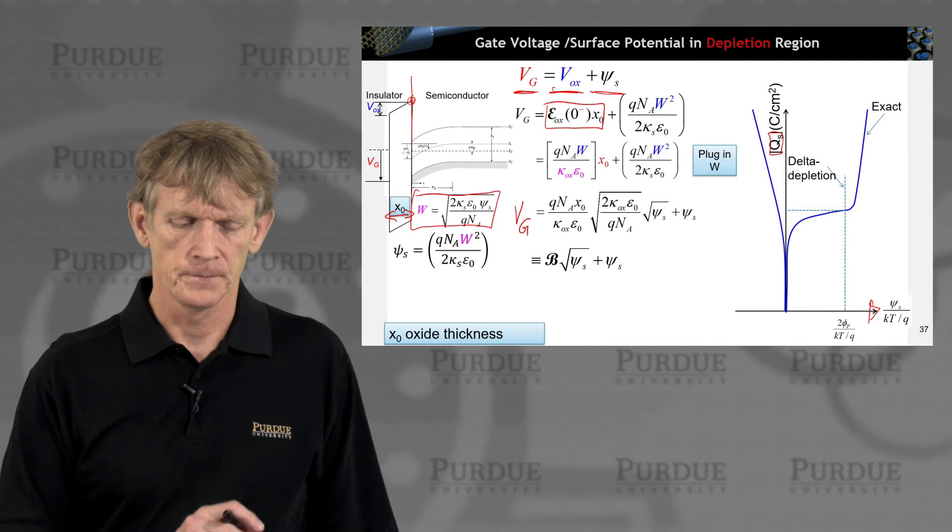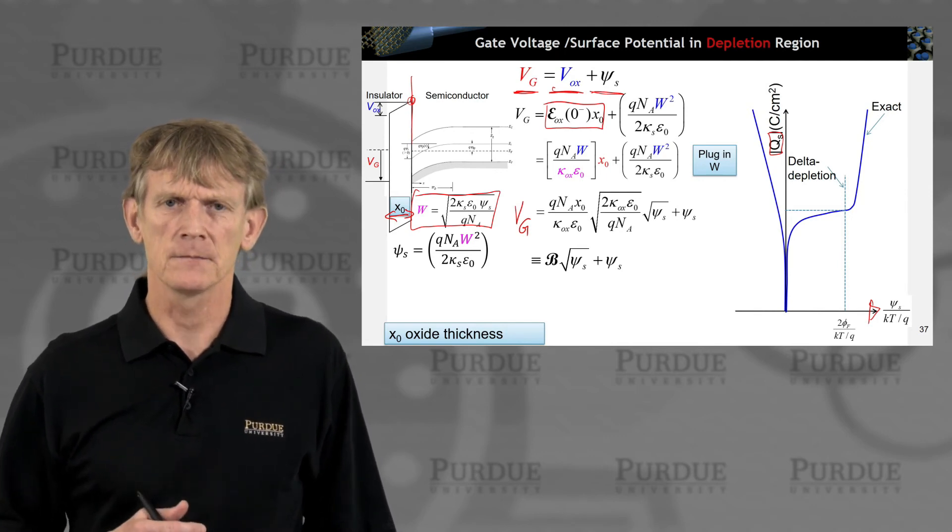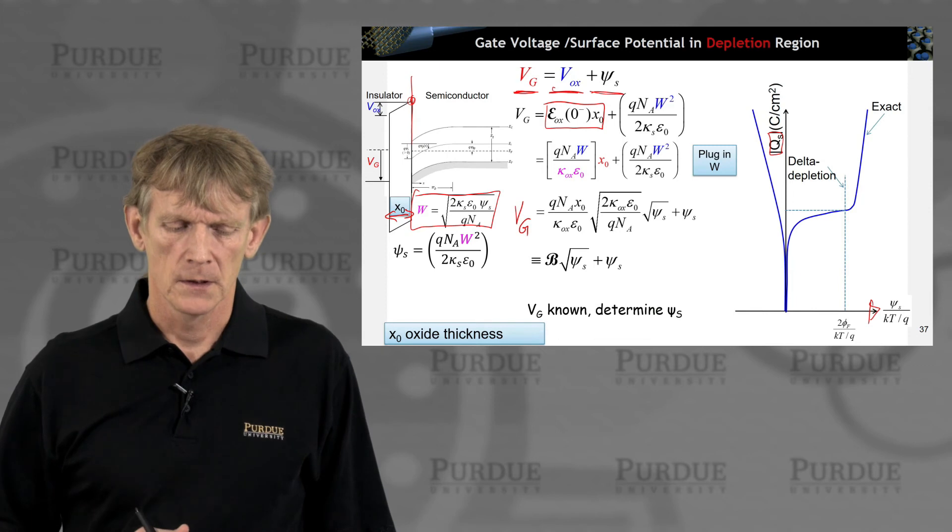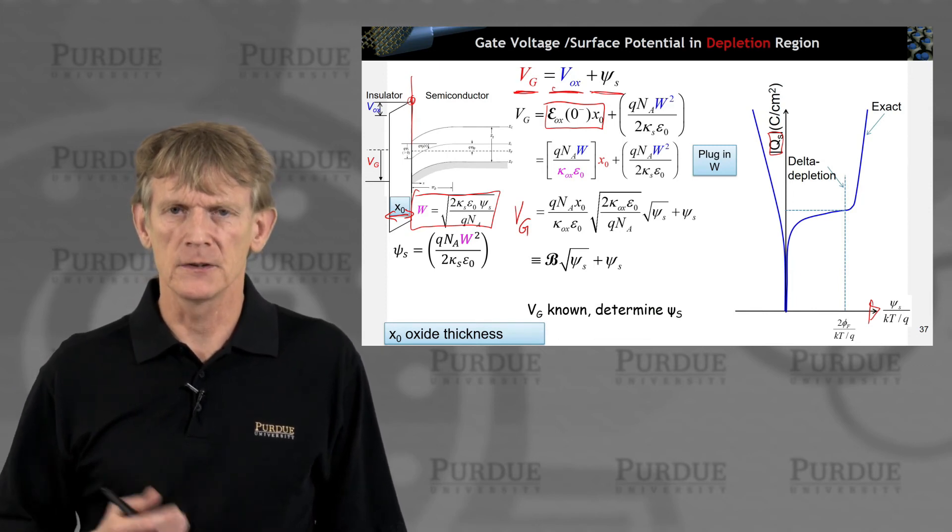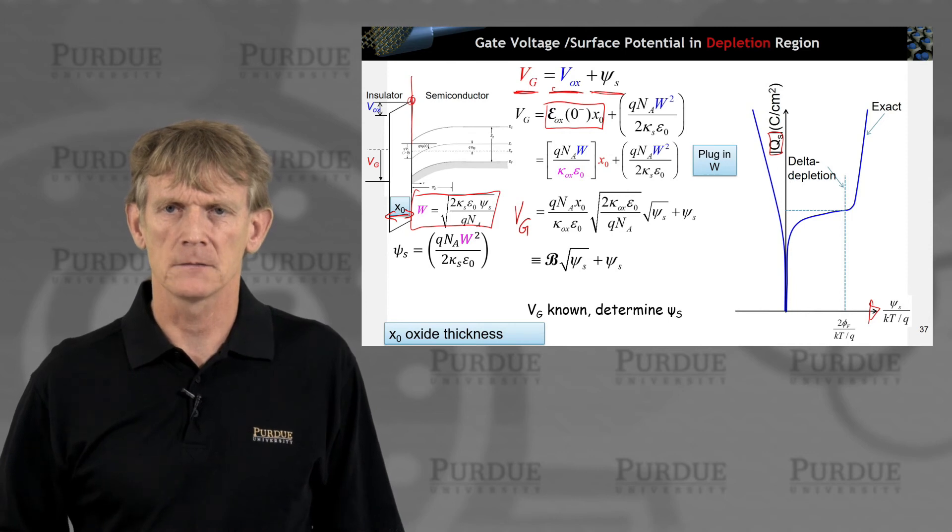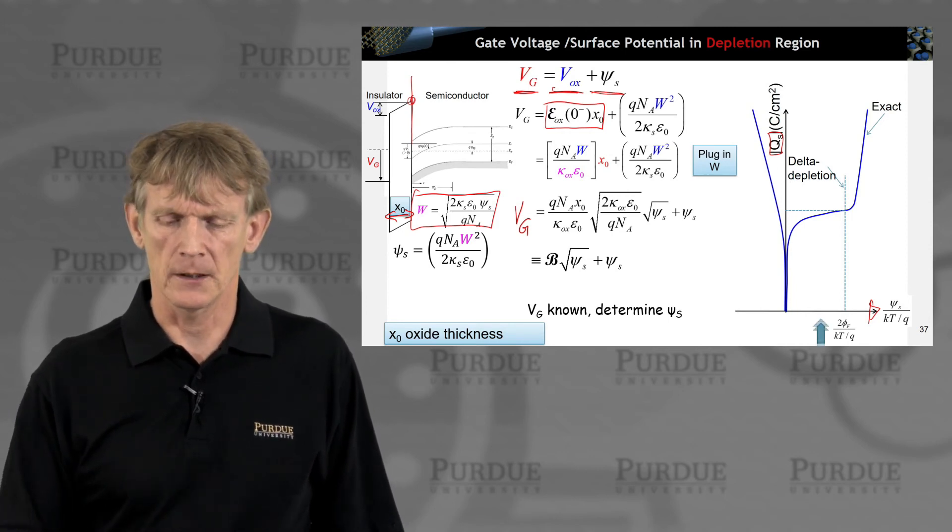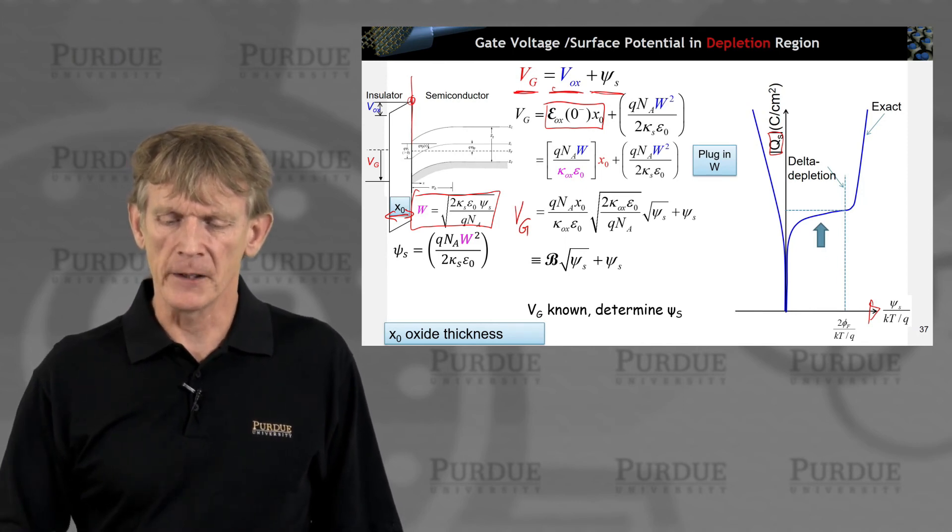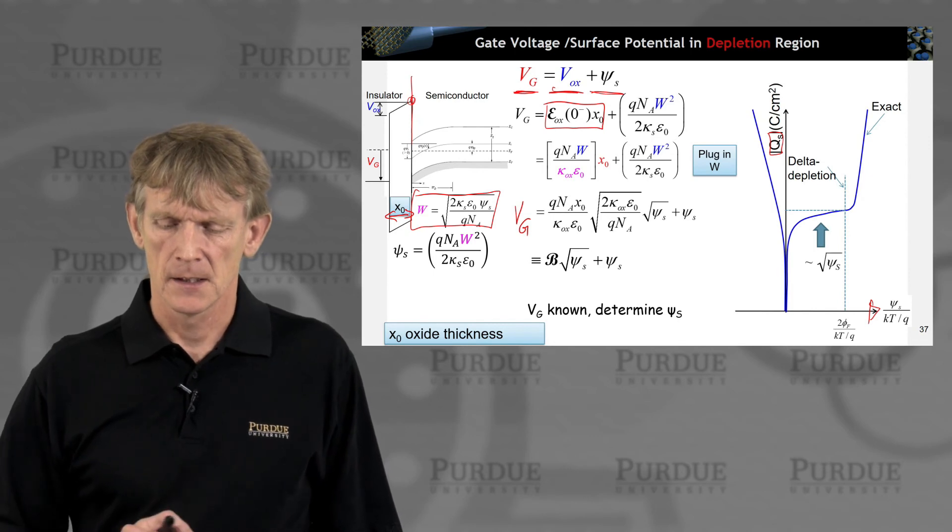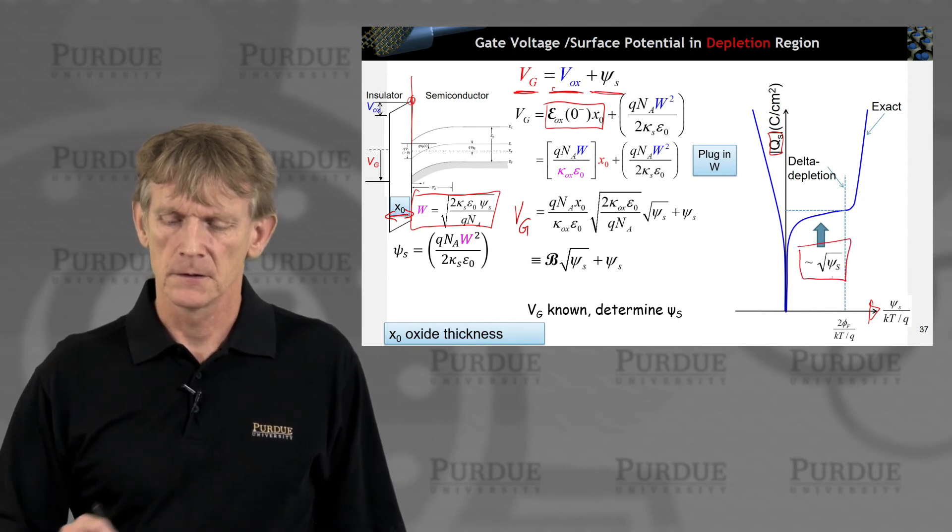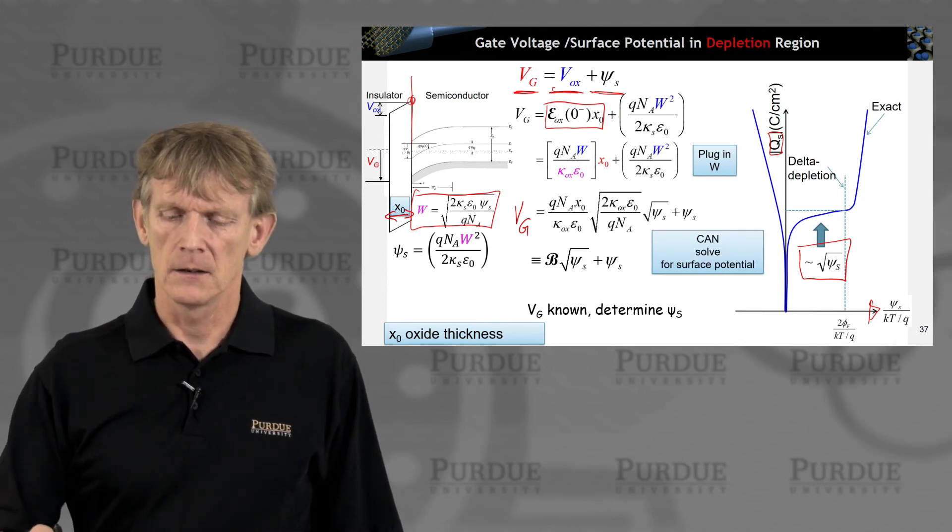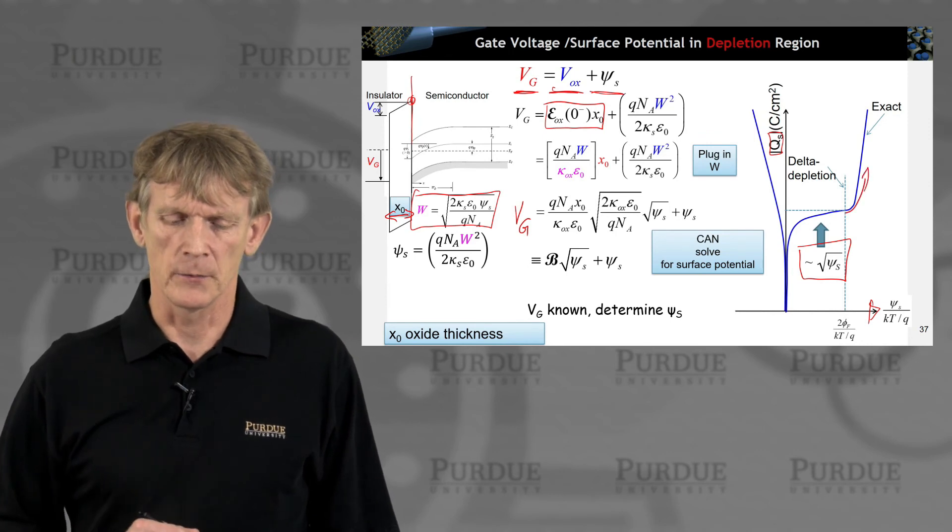No real magic here. Just doing electrostatics. That means I can give this some coefficient times the square root plus the surface potential. If I know what my gate is, I can now determine the surface potential. So, I have a recipe on how to compute that. And let's look in the depletion region here and understand this here. That goes as the square root. And then we have this other region over here that we'll need to discuss in a minute.